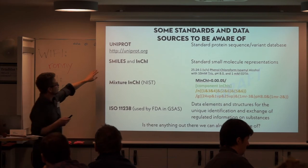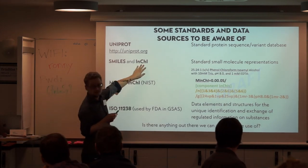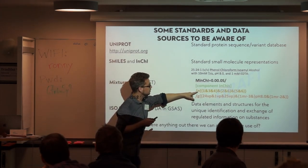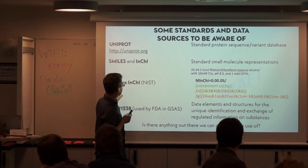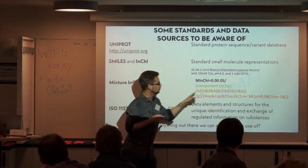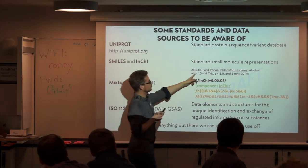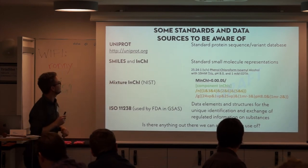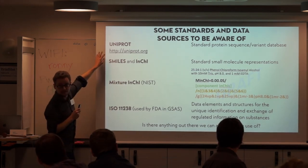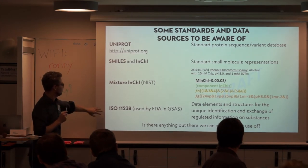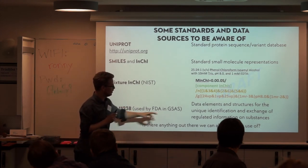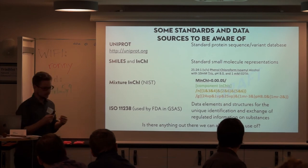There are some things to help us. There's SMILES or InChI — InChI was developed by NIST to describe their mass spectroscopy database. You can actually have mixture InChI that also says you're combining molecules in different ways, so you can describe something like a 25:24:1 phenol-chloroform-isoamyl alcohol in a Tris buffer using this kind of description. UniProt is kind of a standard case for getting biopolymer information for proteins. There's also ISO-11238, which is used by the FDA in the US in their GSRS — the Global Substance Registry System — which describes what's in a substance.